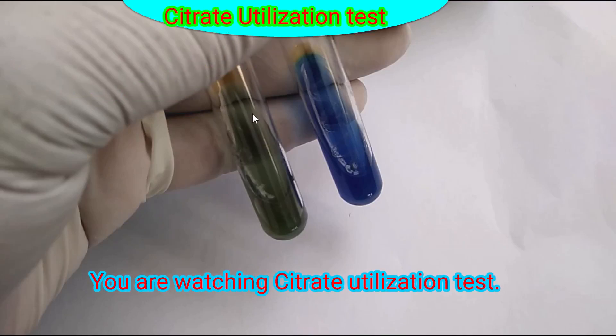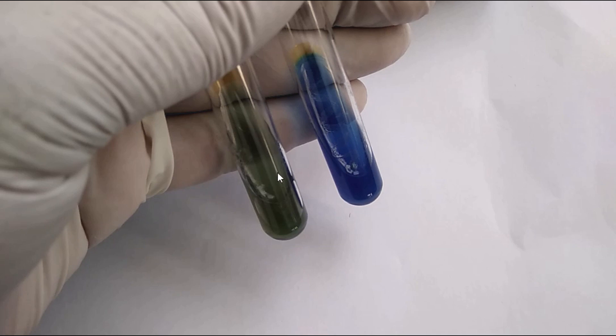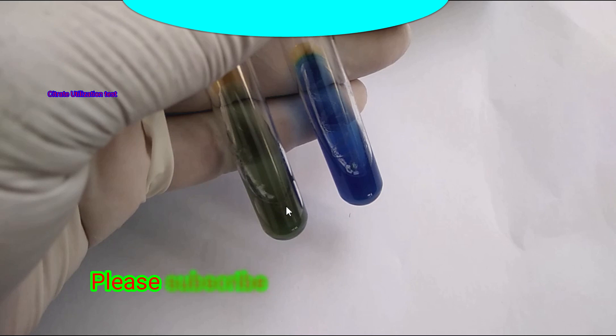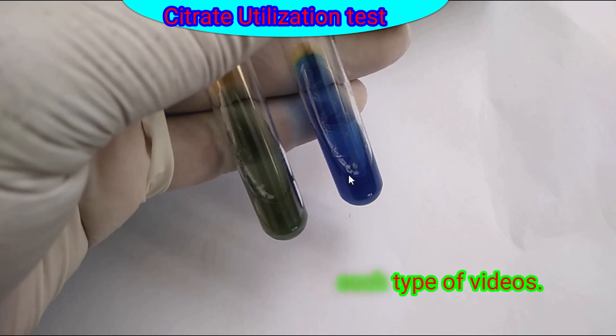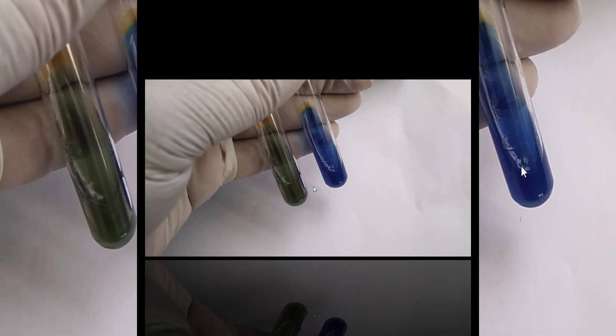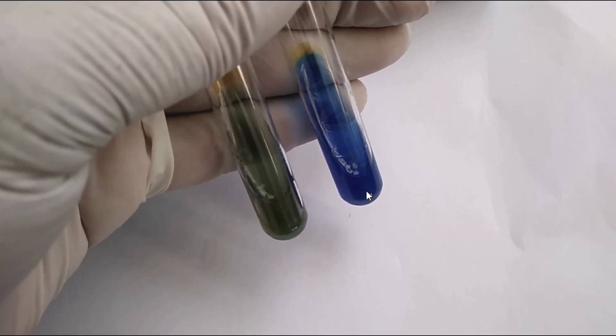This medium is Simmons citrate. The sole source of carbon is citrate, and the indicator is bromothymol blue. When the pH of the medium is shifted above 7.6, it changes from green to blue color, indicating a positive result.